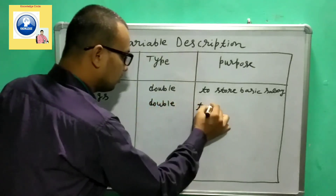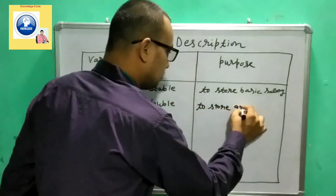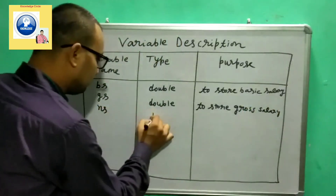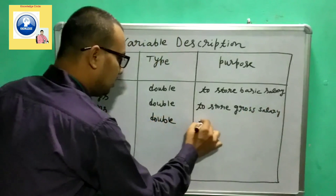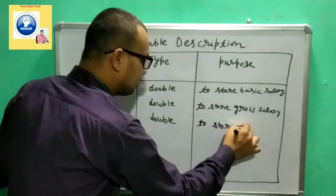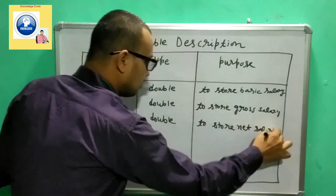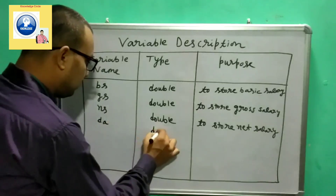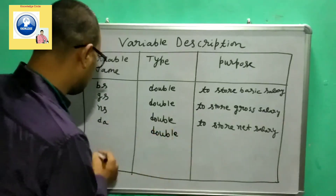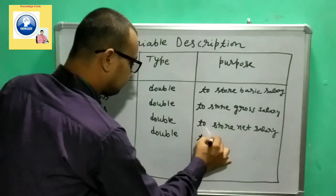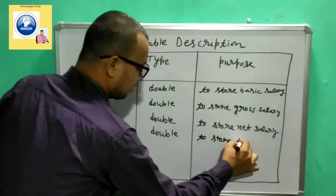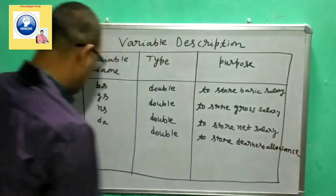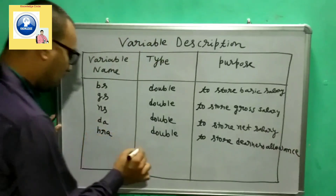Next I'm taking 'ns' to store net salary. Then we need 'da' for dearness allowance — it may also be a float value, so we'll take it as double to store dearness allowance.